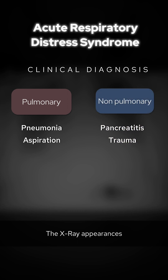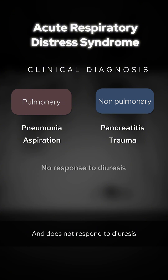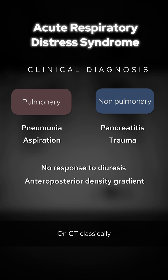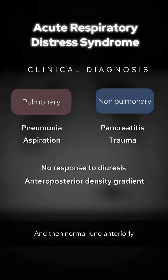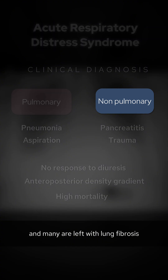The x-ray appearances of ARDS can be very difficult to differentiate from cardiogenic pulmonary edema, but a pattern that persists for days and does not respond to diuresis should make you suspicious. On CT classically, there is more dense consolidation posteriorly, blending into ground glass opacity, and then normal lung anteriorly, although this isn't completely specific. This can be very difficult to treat, with a high mortality, and many are left with lung fibrosis.